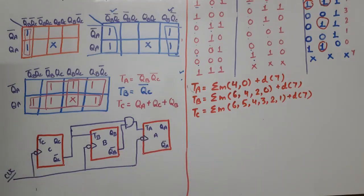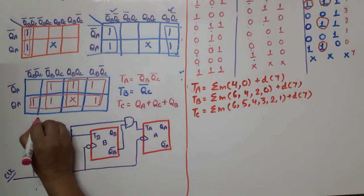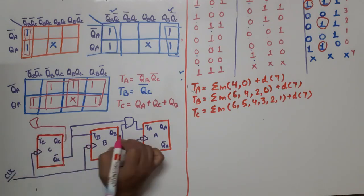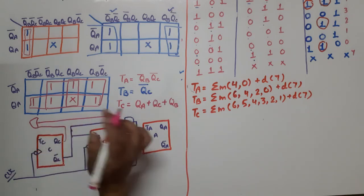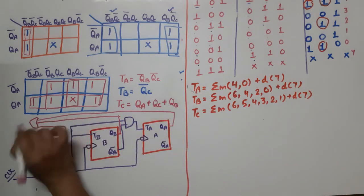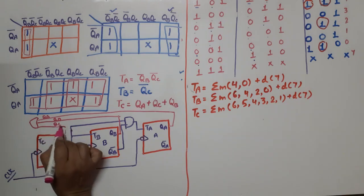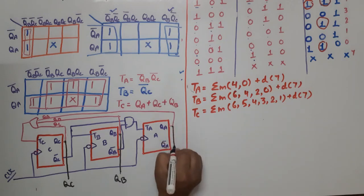For TC, which equals QA + QC + QB, we need an OR gate with three inputs: QC, QB, and QA connected from the respective flip-flop outputs. The output of this OR gate connects to TC.